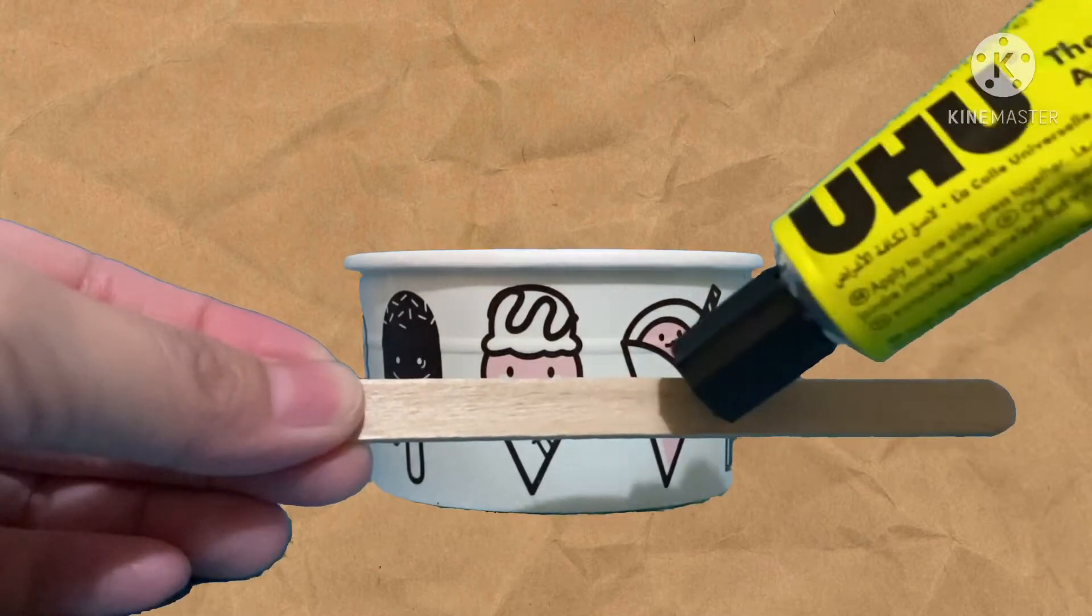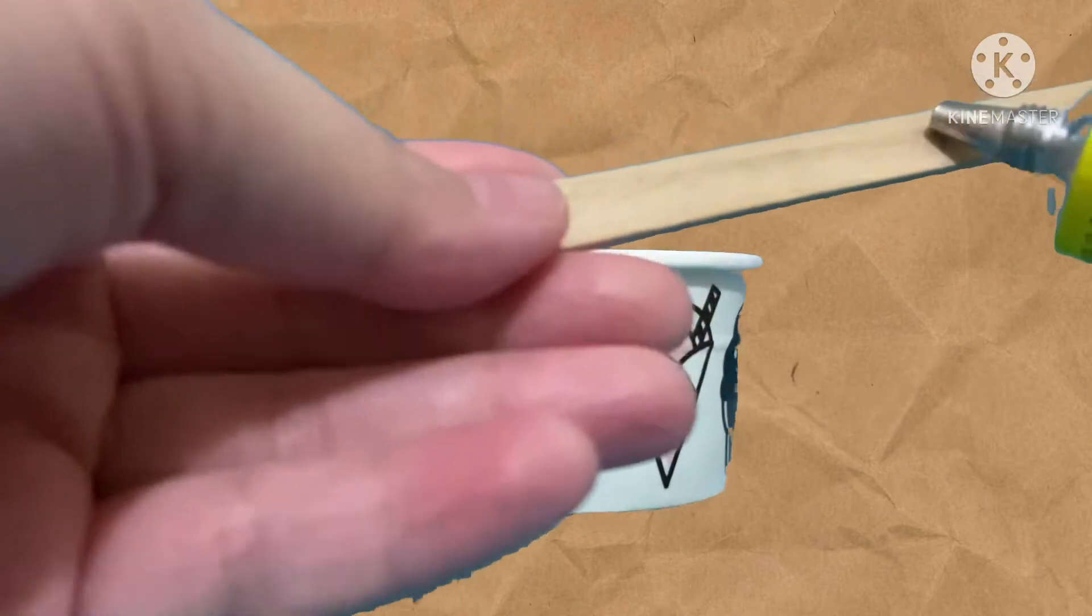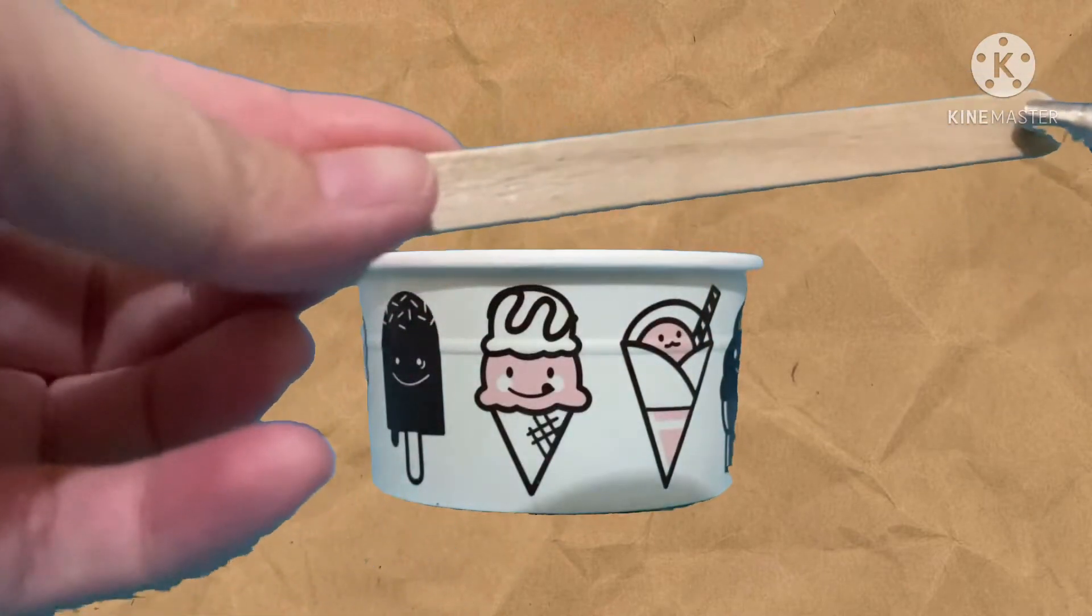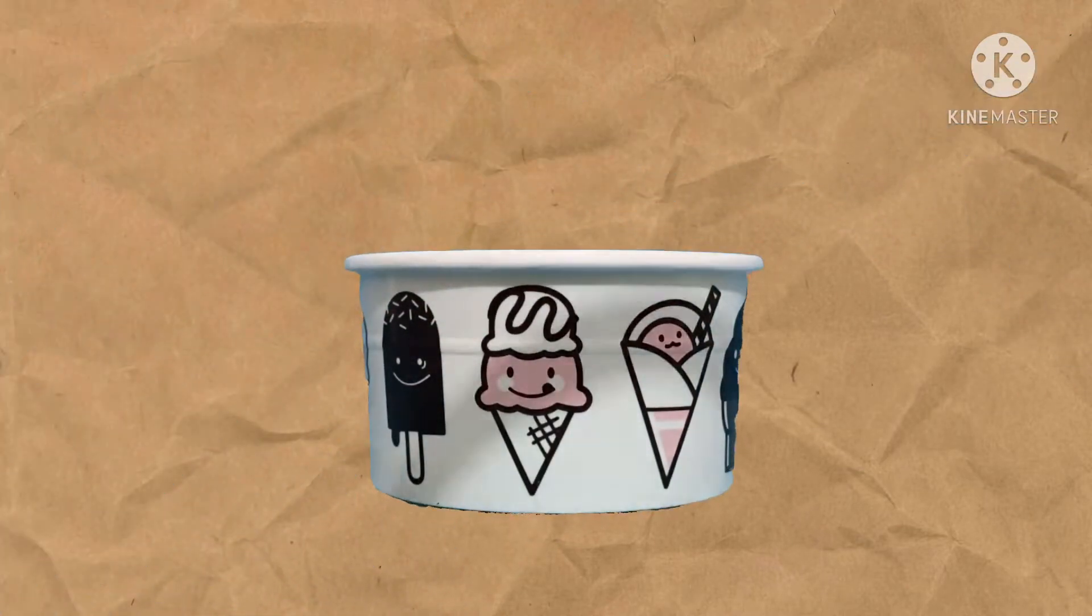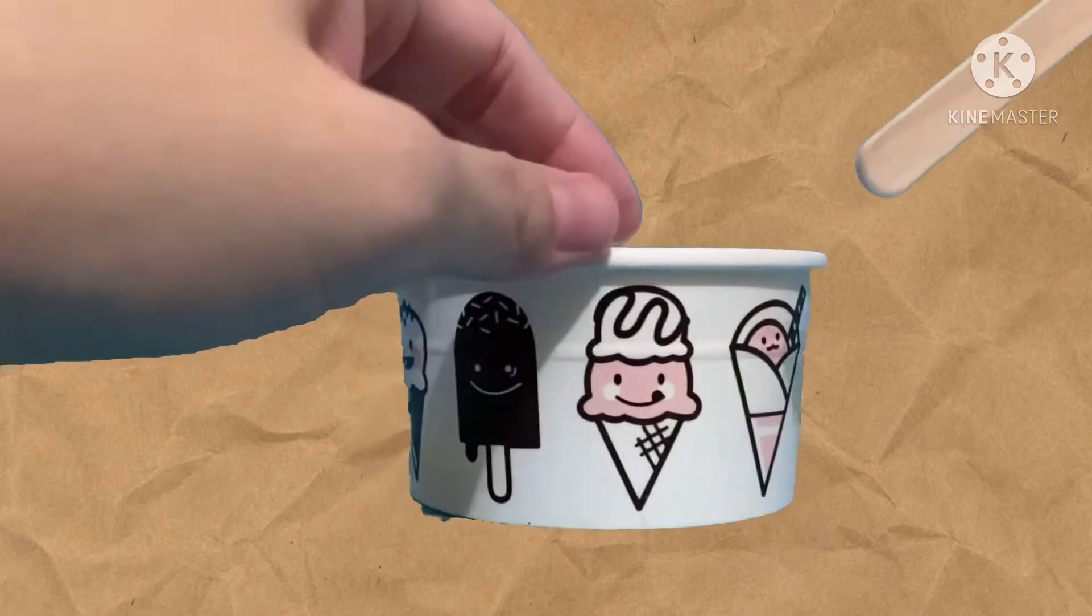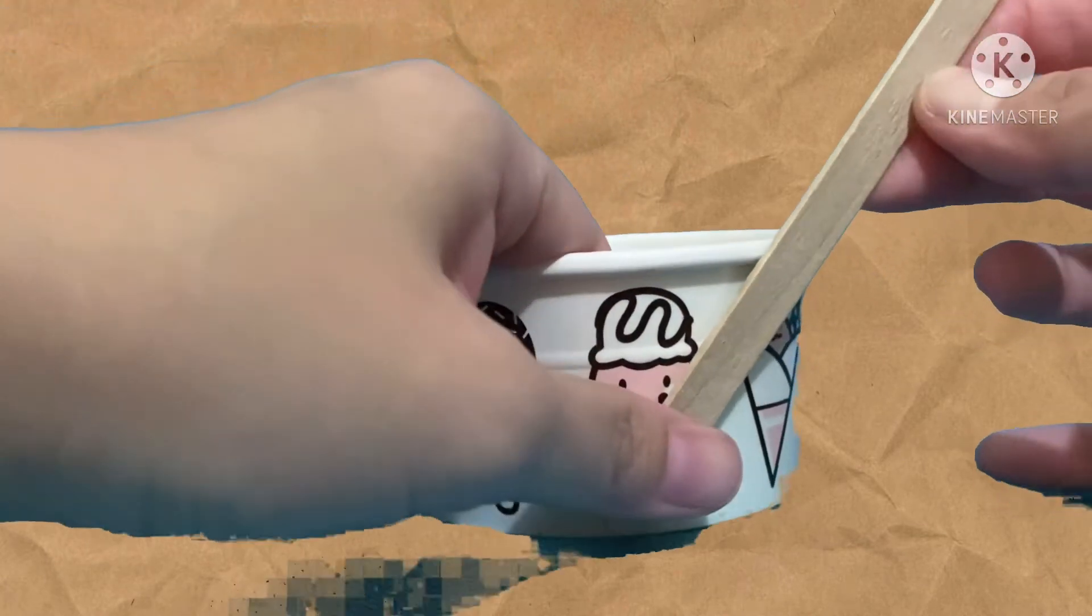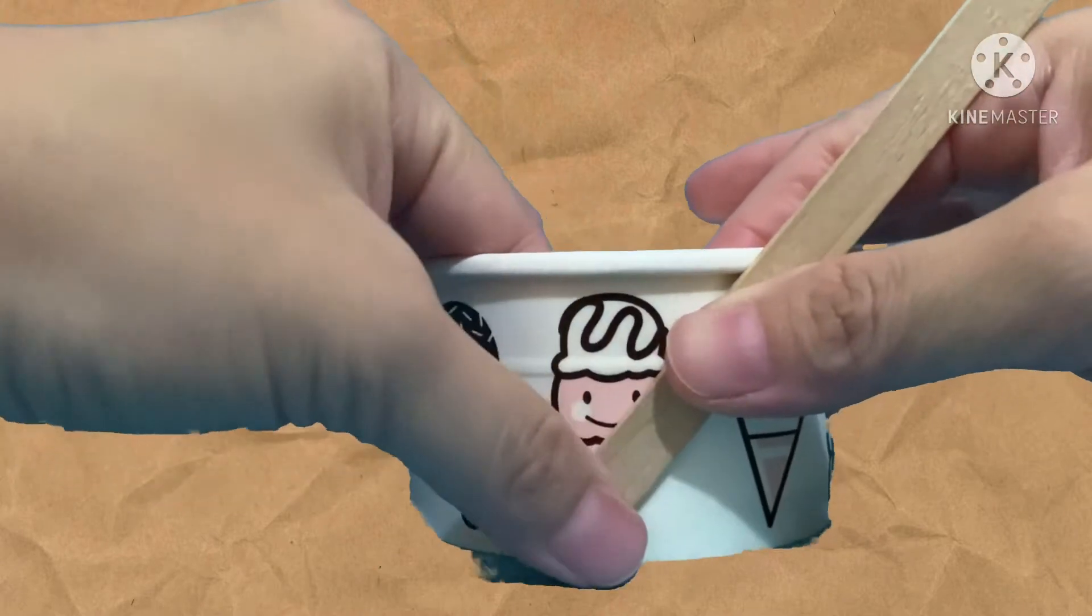Spread the glue on the ice cream stick and paste it on the side of the paper cup. Make sure it sticks properly. You need to give it a squeeze.